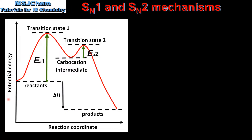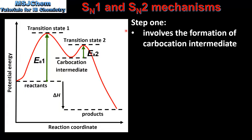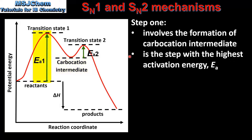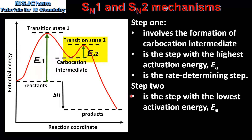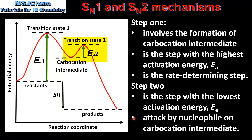We will end the video by looking at energy profiles for the SN1 and SN2 mechanisms. The SN1 mechanism is a two-step mechanism. Step 1 involves the formation of the carbocation intermediate and it is the step with the highest activation energy — therefore it is the rate determining step. Step 2 involves the attack by the nucleophile on the carbocation intermediate and has the lowest activation energy.